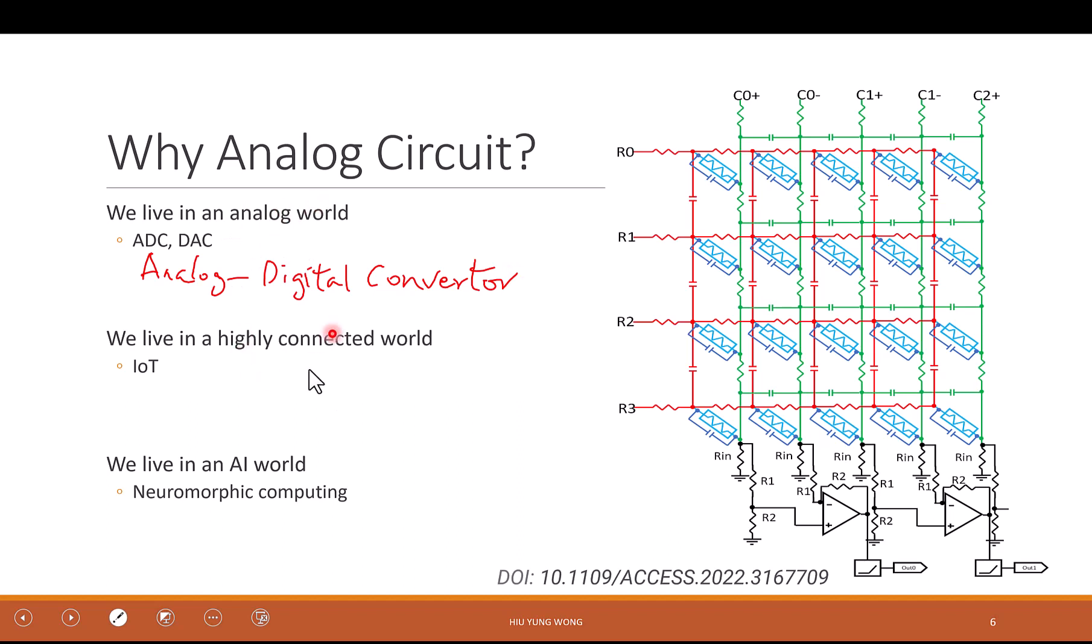Another thing is we are in a highly connected world, right? IoT, Internet of Things. We also need to interact with the analog world. I always imagine in the future, every piece of wood in your house or brick in your house probably has an IC chip, but it's very, very low cost. We make it very low cost, maybe 0.01 cents, and it's going to just sense the humidity.